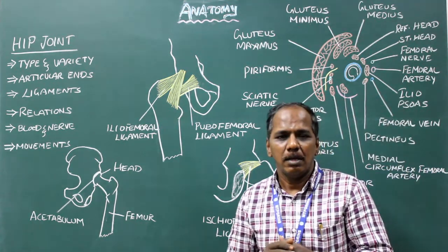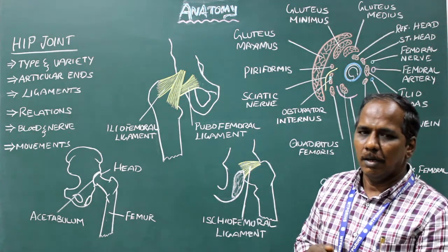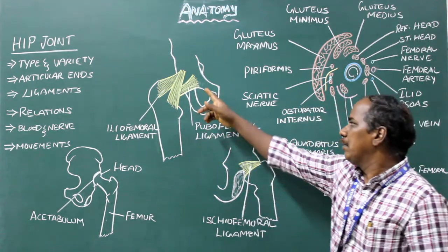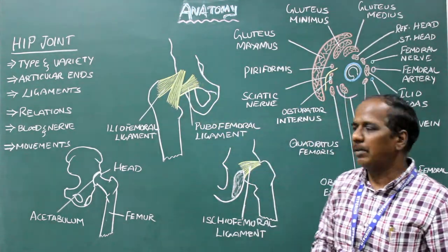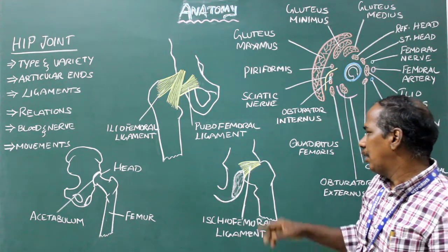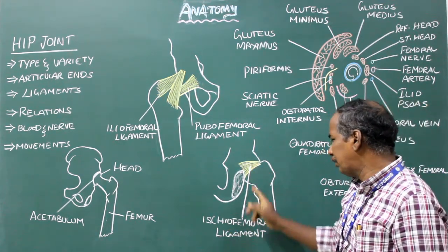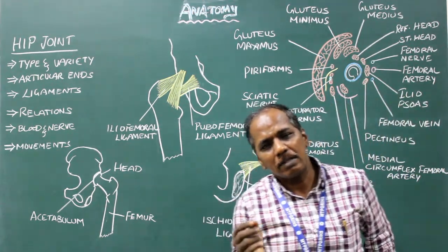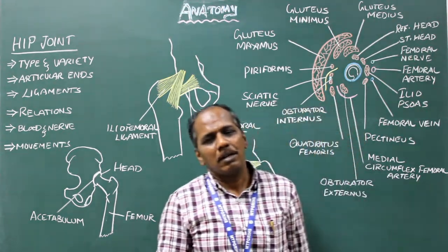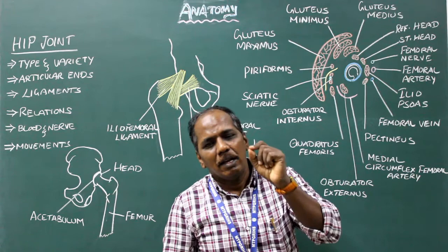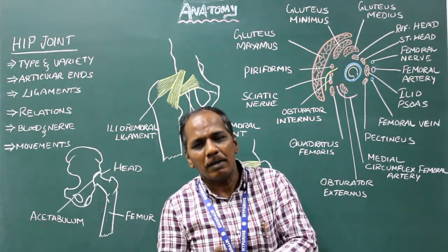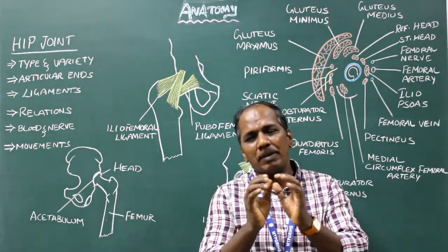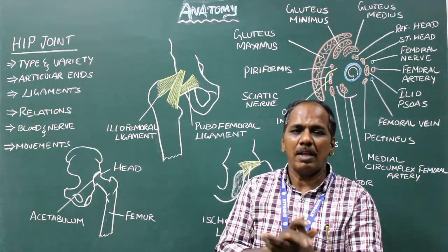Ligaments: 1. Capsule. 2. Iliofemoral ligament. 3. Pubofemoral ligament. 4. Ischiofemoral ligament. 5. Transverse ligament of the acetabular notch. 6. Ligamentum teres or round ligament of the head of femur.